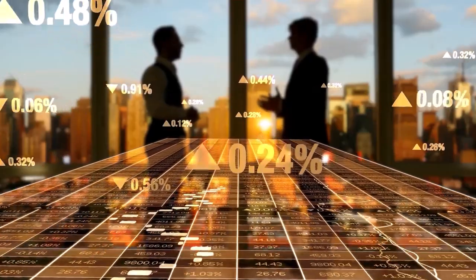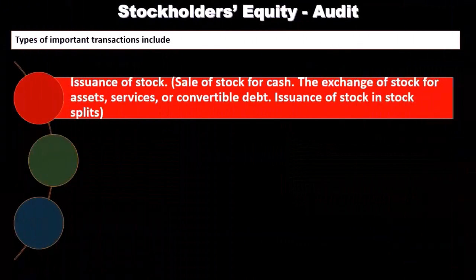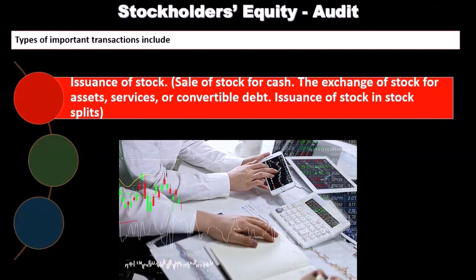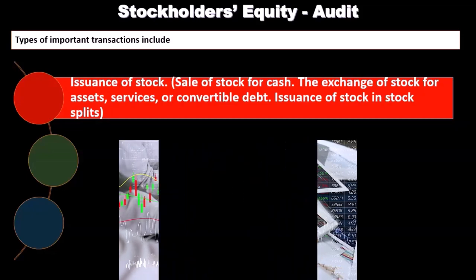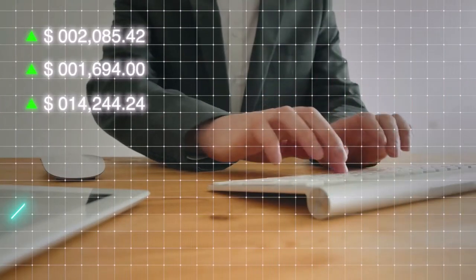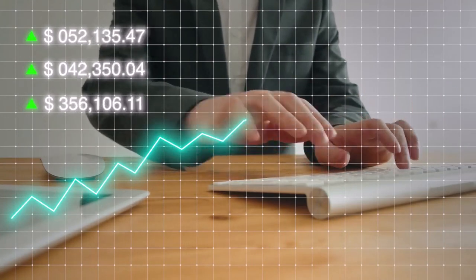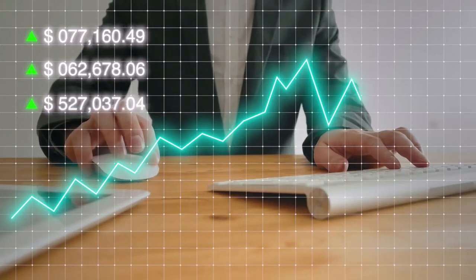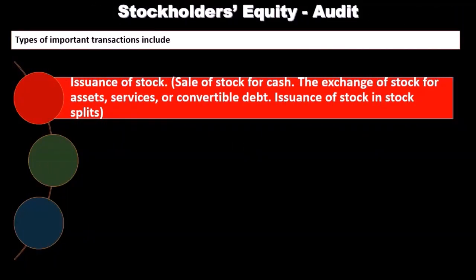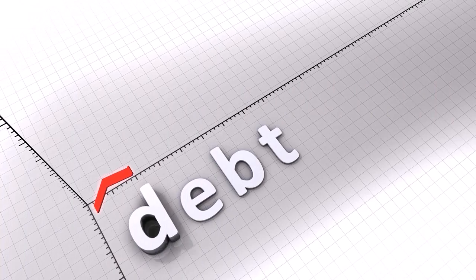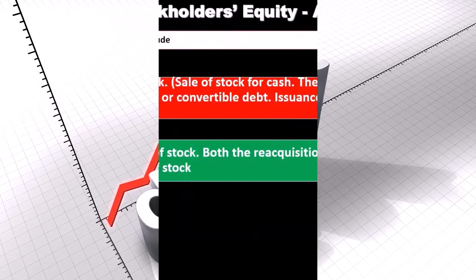If we're talking about a publicly traded company, it may be the case that new stock will be issued, but it's probably not a lot of transactions compared to other areas within the financial statements. For smaller companies, there's quite likely no stock issuance taking place. If there's a stock issuance for cash, that's fairly straightforward. It gets more complex if stock was issued for something other than cash — such as in exchange for assets or the relief of debt. Stock splits can also be a little more complex than a straight cash transaction.